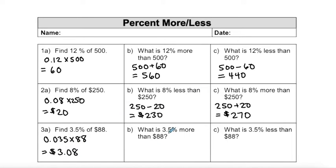So if I want 3.5% more than $88, I'm taking my 88 and adding it to my 3.08, that gives me $91.08. And if I wanted 3.5% less than $88, I take my 88 and subtract my $3.08.